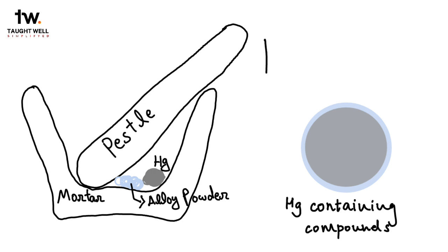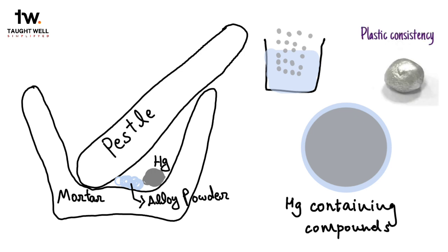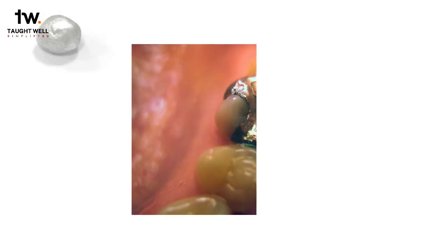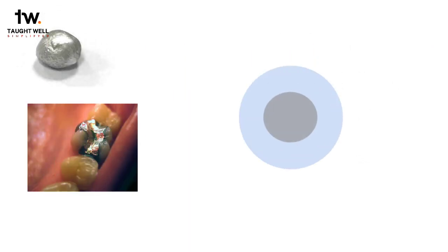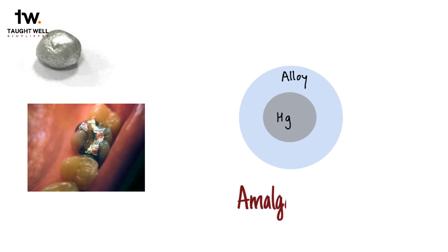Simply put, you can compare this process to adding sugar to water until the sugar stops dissolving. During this period of reaction, the metal particles co-exist with the liquid mercury, giving the mix a plastic consistency. This basically means that the mixture can be adapted to any shape with light pressure. As the content of liquid mercury in the mixture decreases, the mixture hardens. This process is called amalgamation, and this material has been used for restoring tooth structure.